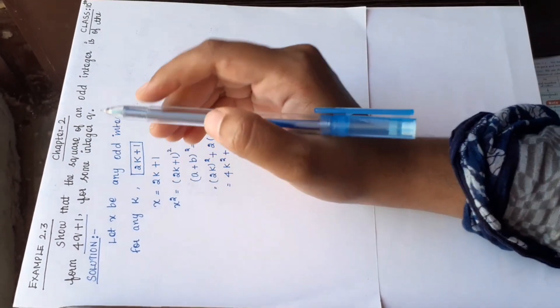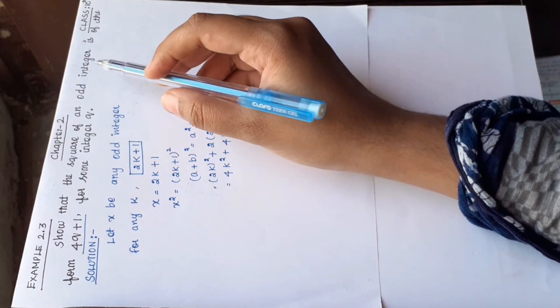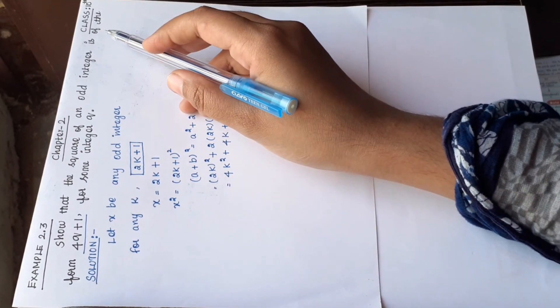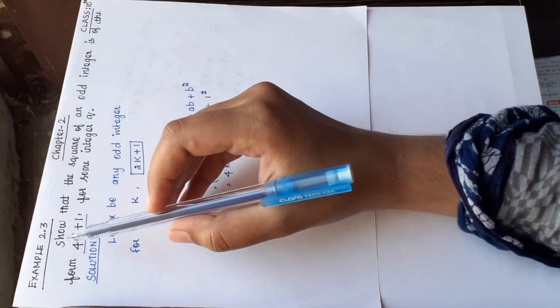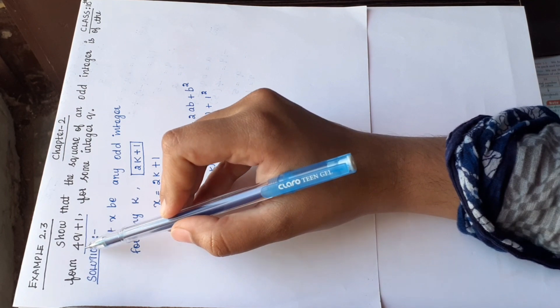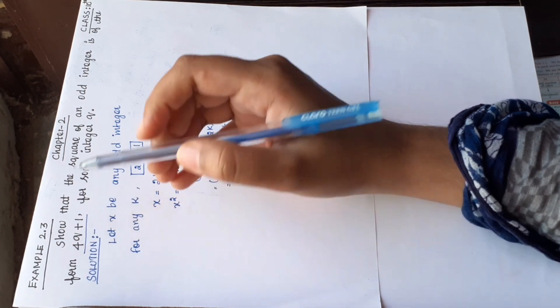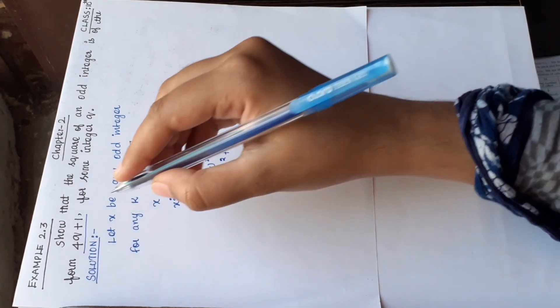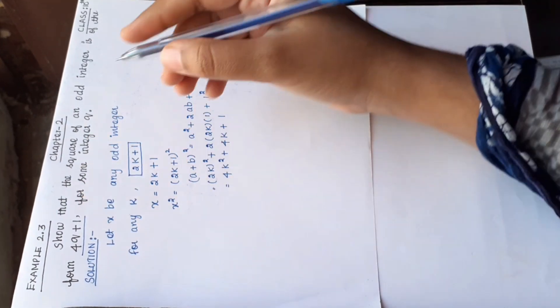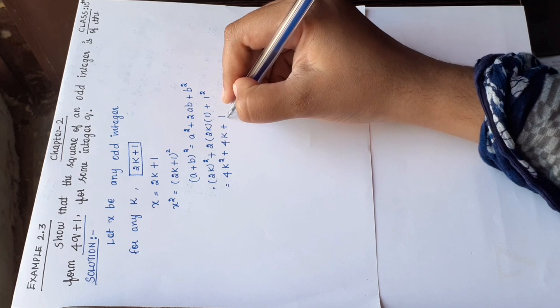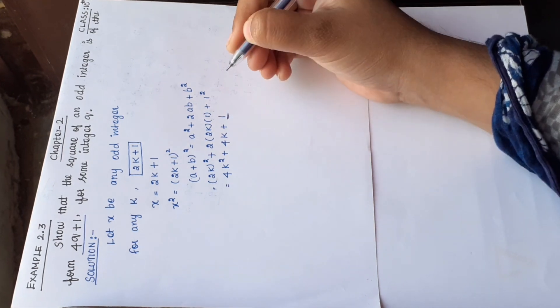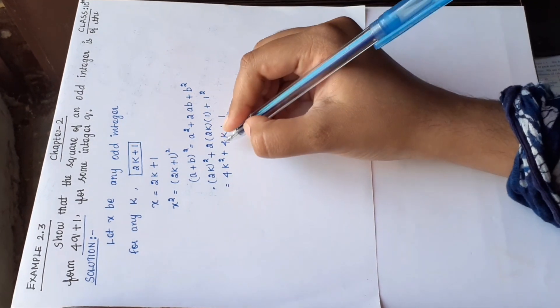நம்லோட question-ல என்ன சொல்லிருந்தாங்கன்னா, square of an odd integer is of the form 4Q plus 1. அந்த plus 1 இங்கேயும் இருக்கு, பார்க்கலாம்.